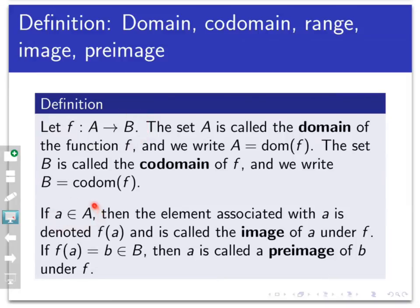If a is an element of capital A, the domain of my function, then the element that gets associated with it is denoted f of a, and we call that the image of a under f. If f of a equals some element b in set B, then we say a is a pre-image of b under f. For images, we think in the forward direction: starting with an element in the domain, what does it get changed into? For pre-images, we start with an element in the co-domain and ask what was put into the process to get it.